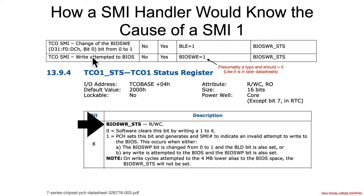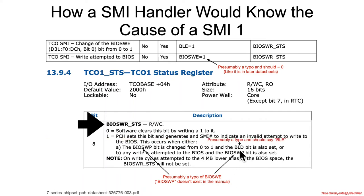Normally, the way that it gets set to one is the PCH sets this bit and generates an SMI to indicate an invalid attempt to write to BIOS. Unfortunately, there just seems to be a bunch of typos here. It says that the BIOS WP bit is changed from zero to one and the BLD bit is also set — but there are no hits in the manuals for BIOS WP. I think that's supposed to be BIOS WE, BIOS write enable. Furthermore, I think BLD is probably supposed to be BLE. So it either means the BIOS write enable bit is changed from zero to one and the BIOS lock enable bit is set, or any write is attempted to the BIOS and the BIOS write enable bit is also set.